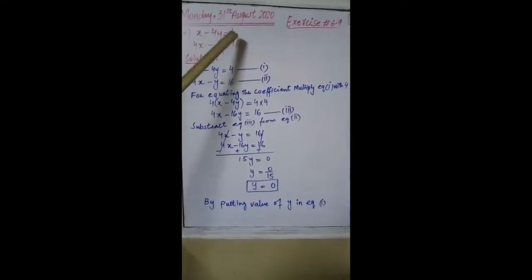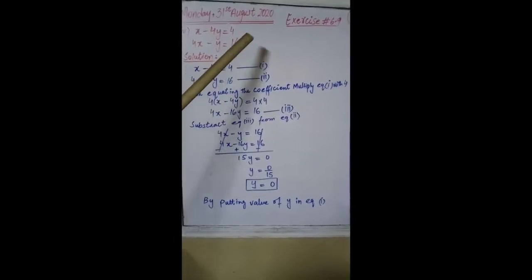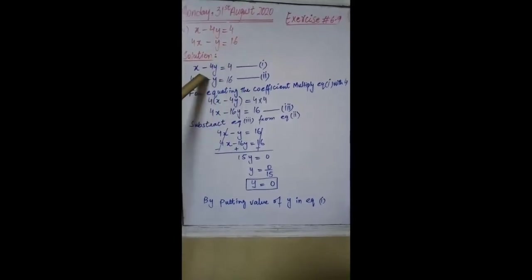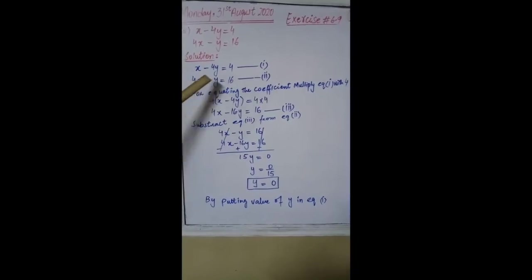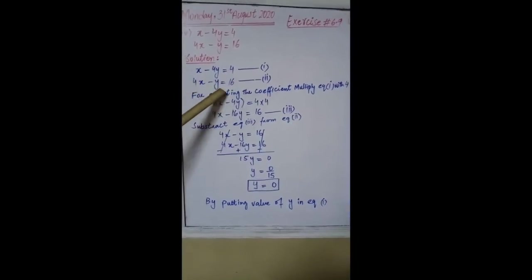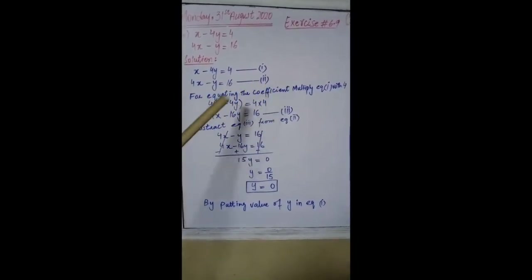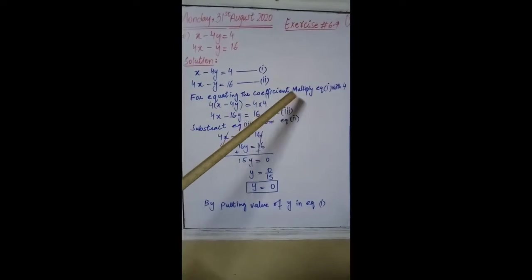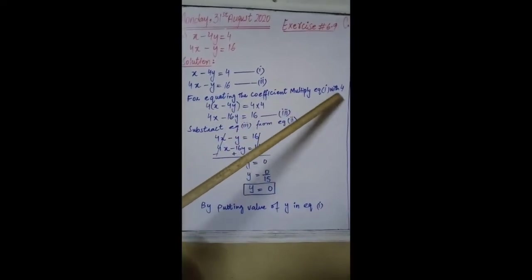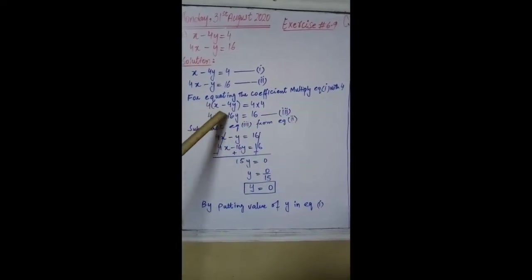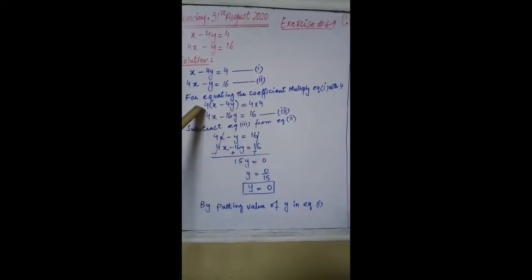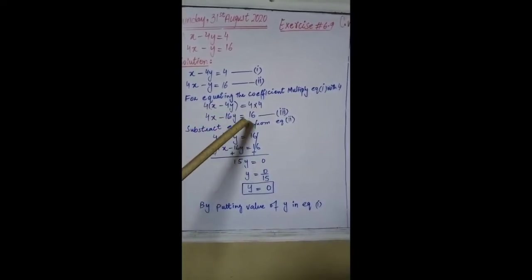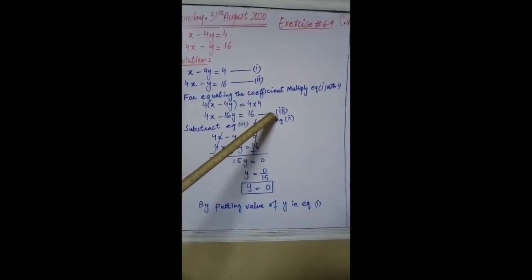Part 4: x - 4y = 4, and 4x - y = 16. x - 4y = 4 is our first equation, and 4x - y = 16 is our second equation. For equating the coefficients, multiply equation 1 by 4: 4(x - 4y) = 4 × 4, giving 4x - 16y = 16, which is our third equation.